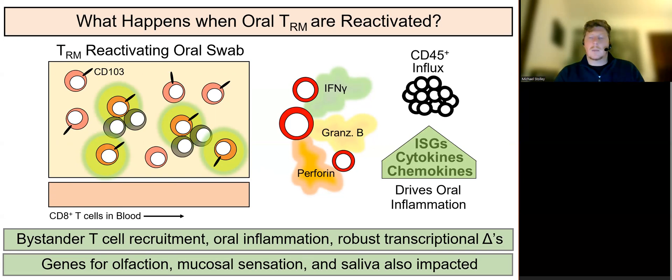Genes for chemoreception, mucosal sensation, saliva composition, and those implicated in oral inflammatory diseases, including periodontitis, were similarly invoked.